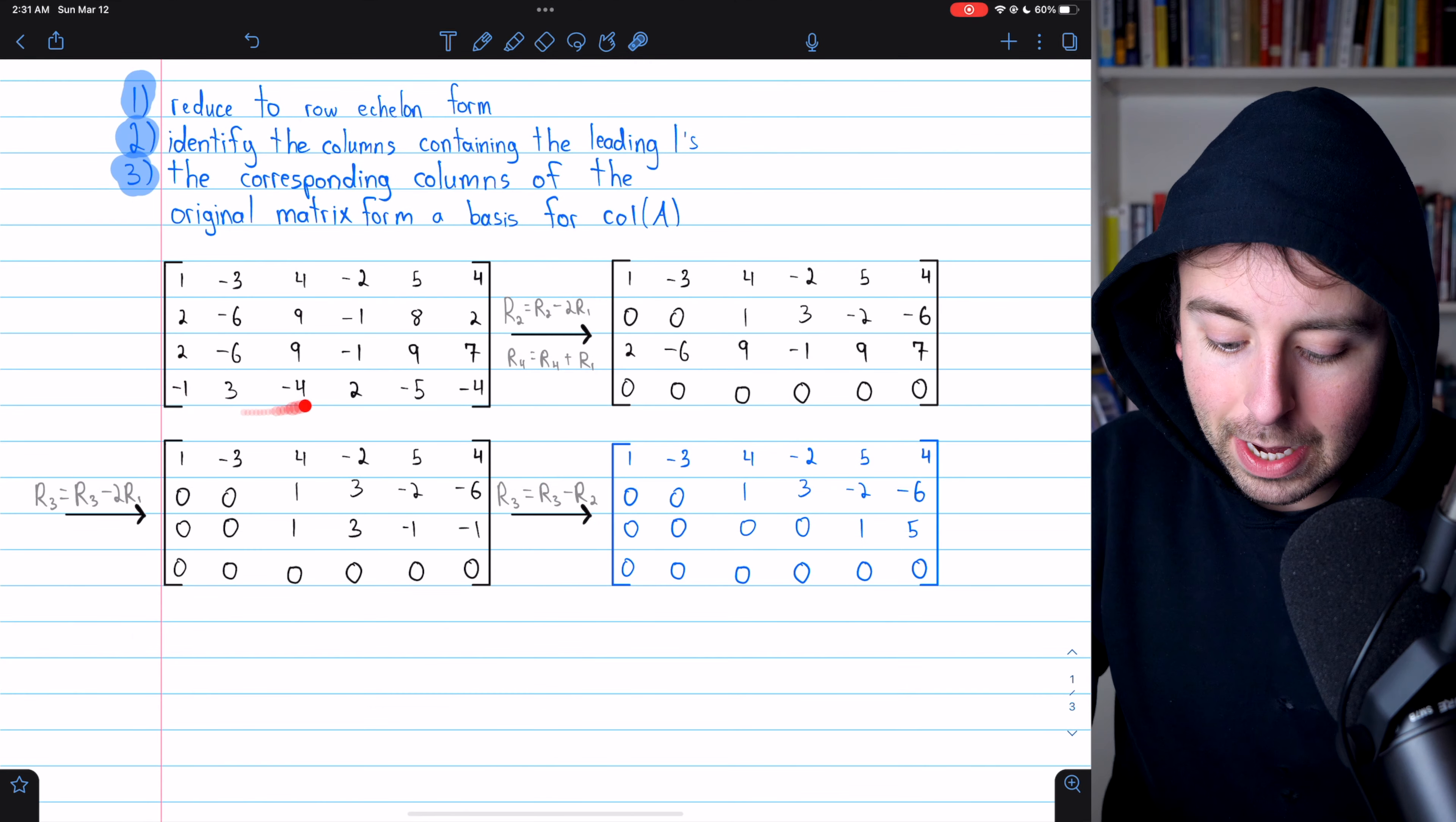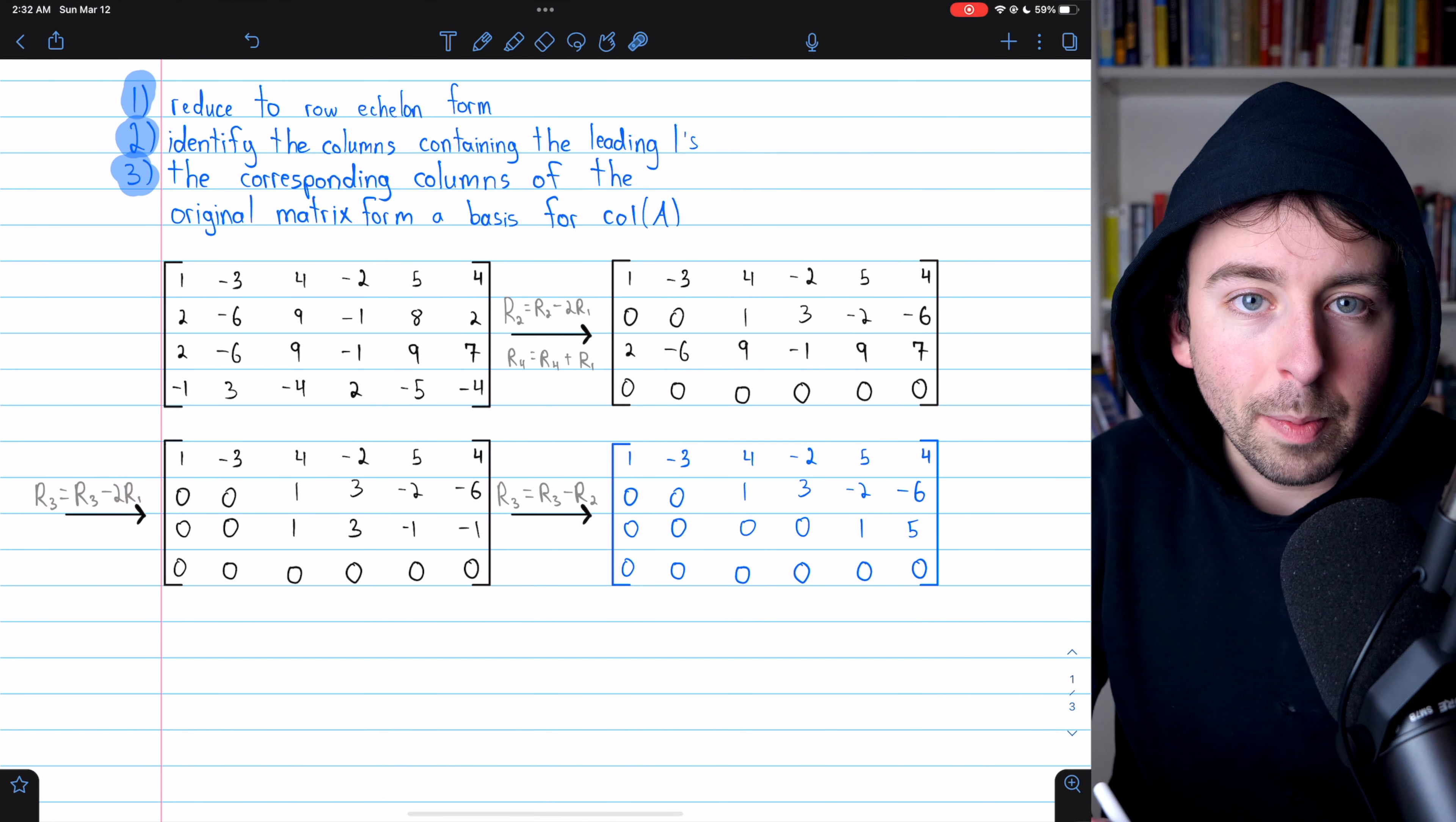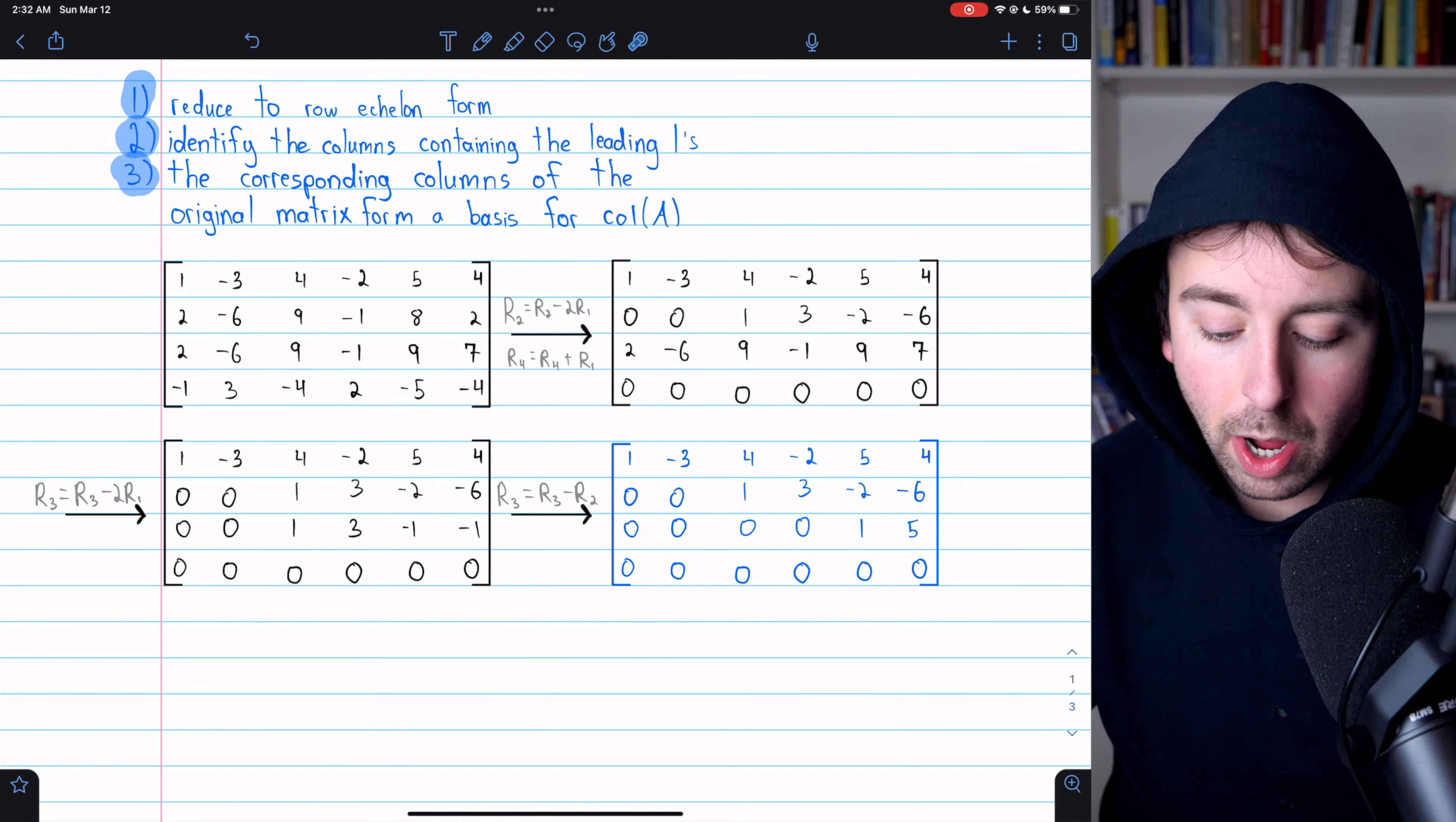Alright, here is our original matrix and the elementary row operations we perform to get it into row echelon form. I won't explain these all in detail. I assume you're comfortable with this process. I'll explain just this step here to make sure my notation is clear. When we go from here to here, what we do is replace row three with row three minus two copies of row one.